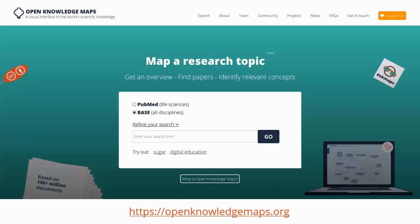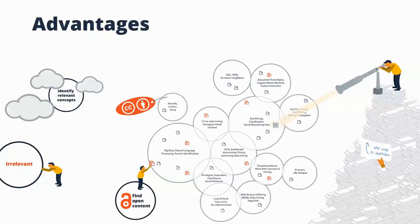So this is Open Knowledge Maps in a nutshell. The advantages are that you can get a bird's-eye view of a field, identify relevant concepts — which is often one of the most difficult tasks in discovery — sort the relevant from the irrelevant, and stay within a specific bubble like digital literacy before branching out later. And while Open Knowledge Maps covers all scientific knowledge, open and closed, we always make it easy to get to open content and add services like the open annotation service by Hypothesis.